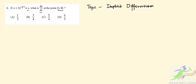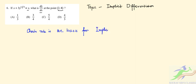Let us solve this problem. In implicit differentiation, the chain rule is the basis for implicit differentiation. So how do we do this using implicit differentiation?